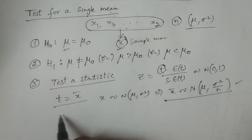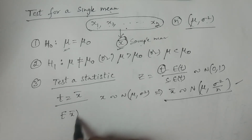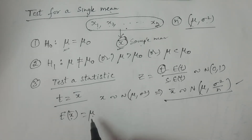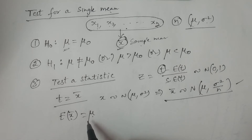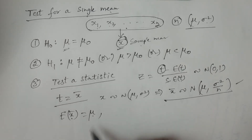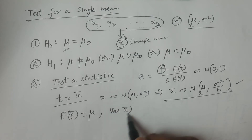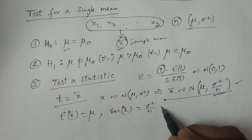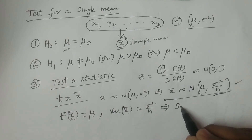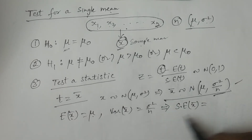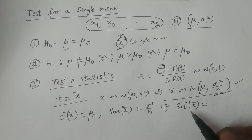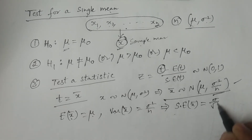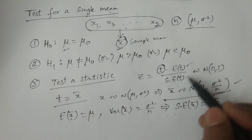Therefore, expectation of x̄ is equal to mu — x̄ is an unbiased estimator of the population mean mu. Similarly, variance of x̄ is equal to sigma square by n, as this distribution specifies. This implies standard error of x̄, which is the standard deviation, is equal to sigma by root n. So all the values — expectation and standard error — have now been calculated.